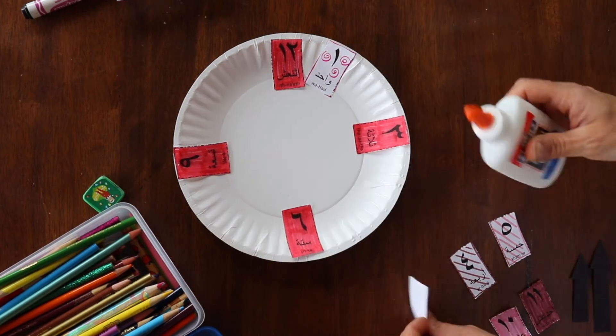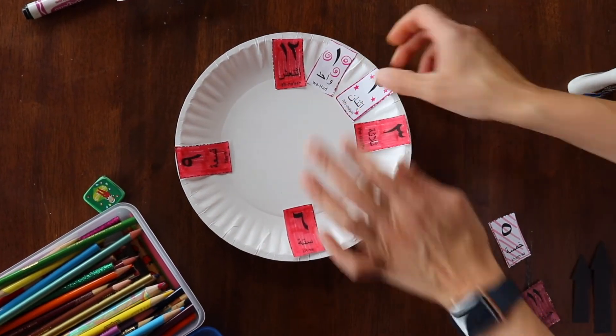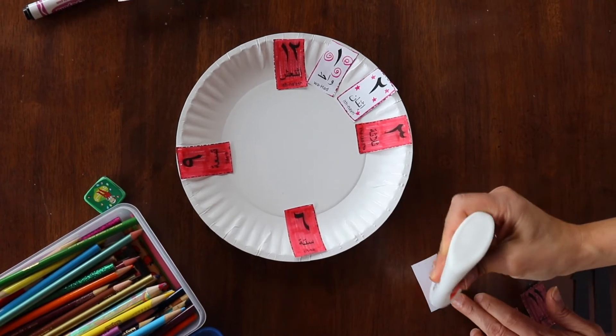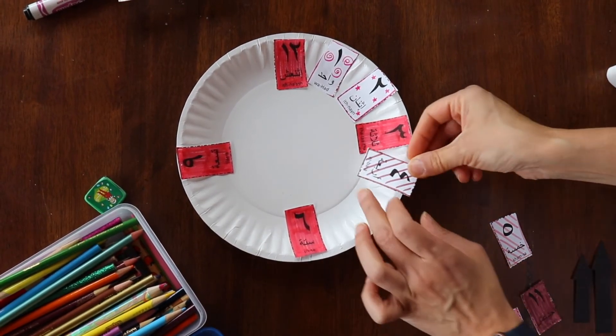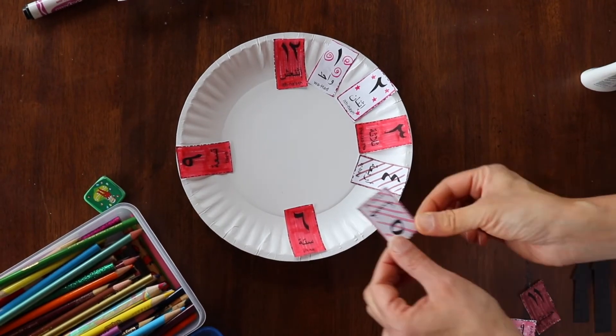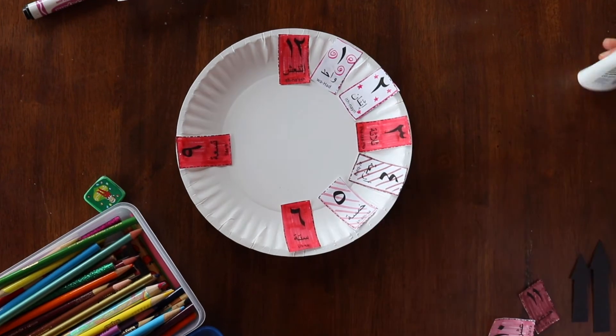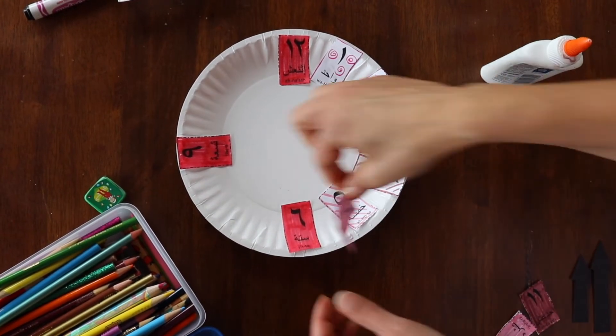So we have Wahad, Tineen, Thalatha is already on there, Arba, Khamsi. Oh gosh, I don't know which way to put it. You decide. Sitte is already on there.